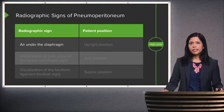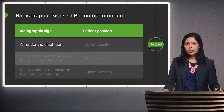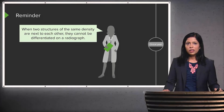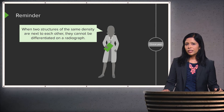Radiographic signs of pneumoperitoneum include air under the diaphragm, which is only seen in the upright position; visualization of both sides of the bowel wall, called the Riggler sign, which can be seen in any position; and visualization of the falciform ligament, called the football sign, seen most often in the supine position. As a reminder, when two structures of the same density are adjacent, they cannot be differentiated on a radiograph — this is called the silhouette sign.